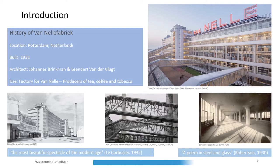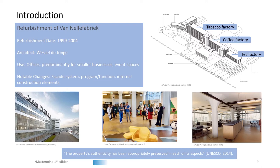Van Nelle Fabrik underwent refurbishment between 1999 and 2004 under the architect Wessel de Jonge and was placed on the UNESCO World Heritage List in 2014. It was designed to accommodate the shift in program from industrial to offices and event space. The following analysis will be focusing on the tobacco, coffee and tea factories.